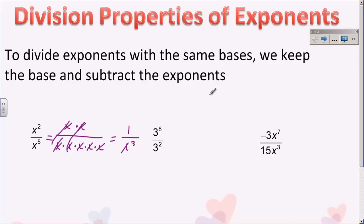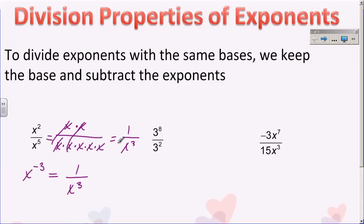So you have a one on top and three x's on the bottom, so it's one over x to the third. But if you do this following the rule and subtract the exponents, you keep the base x and subtract two minus five. Using integer rules, two minus five is negative three. I can't leave it as negative three because I can't have a negative exponent, so I have to rewrite it as one over x to the third. This is the reason why negative exponents get written this way — when you write it in expanded form, everything cancels and you have nothing left on top but stuff remaining in the denominator.